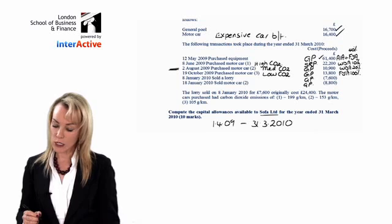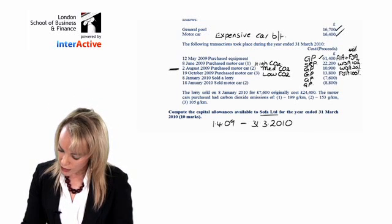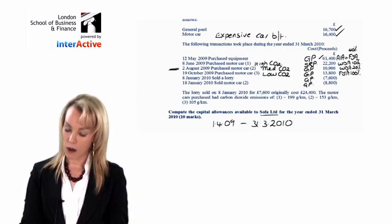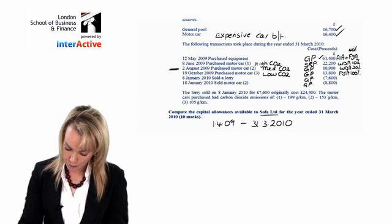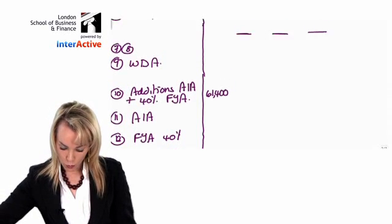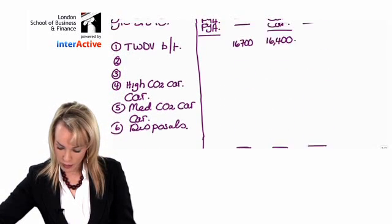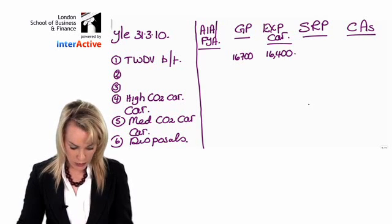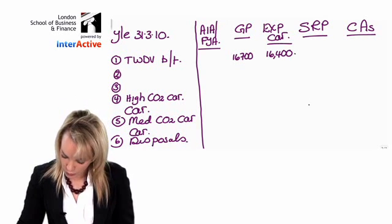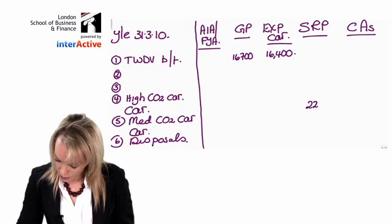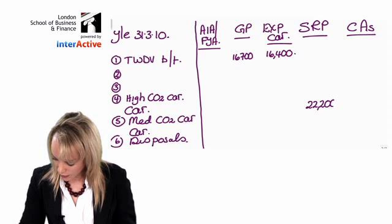Then the next one is 22,200. That one's got special rate pool next to it and it's a high car. If you remember, the high car goes into the special rate pool, so 22,200 goes in like that.